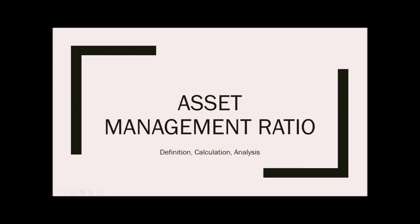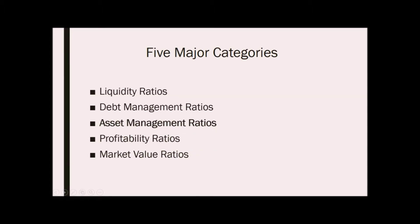The financial stability of a company can be tested in many ways. One of the quickest ways to see just how well a company is performing is to use financial ratios. In this lesson, you will learn what asset management ratios are, how to calculate them, and how to interpret them. There are five major categories of ratio analysis: liquidity, debt management, asset management, profitability, and market value ratios.